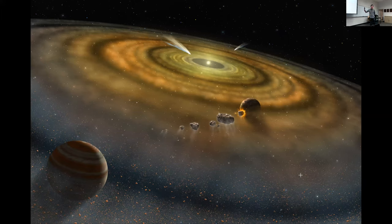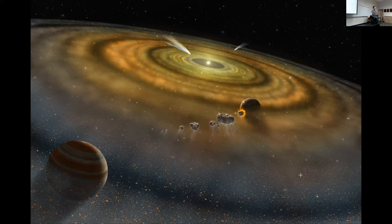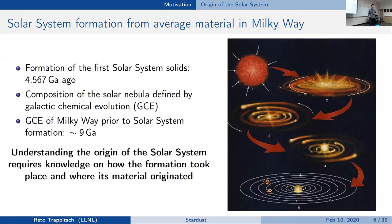This brings me to the topic of what kind of samples I'm looking at. Basically, what we can study really closely is the composition of our own solar system. The early solar system is simply the formation or the evolutionary step in the galaxy after about nine billion years of galactic chemical evolution. Our solar system itself formed around 4.567 billion years ago, which has been fairly well established in the meteoritic record, and its composition is defined by galactic chemical evolution at about nine billion years into the galaxy.